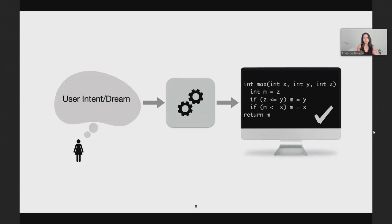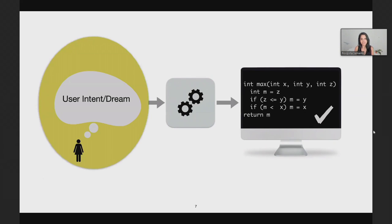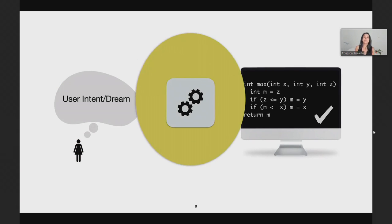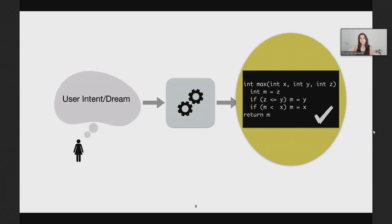So let's pin down the definition. What exactly do I mean by program synthesis in this talk? Well, it's the problem of automatically generating a program that conforms to a user's intent or a dream. And there are three main interrelated parts to this problem: how should one specify the user intent; how should one design or implement the synthesizer given a certain user intent; and given a certain user intent and a synthesizer, how should one ensure that the programs generated indeed conform to the user's intent?